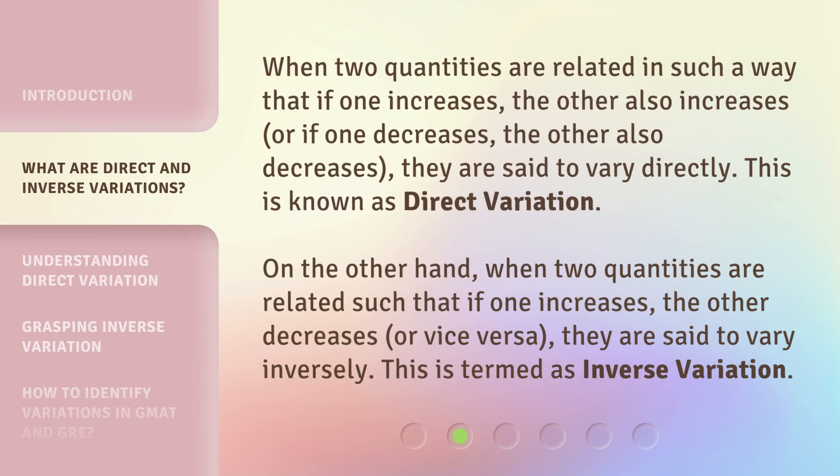When two quantities are related in such a way that if one increases, the other also increases, or if one decreases, the other also decreases, they are said to vary directly. This is known as direct variation.